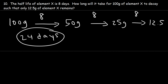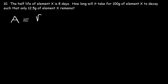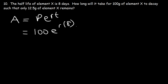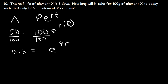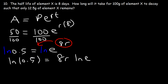Now let's get the same answer using the equation A equals P times e raised to the RT. First we find R: the initial amount is 100, and in 8 days the final amount is 50. Dividing both sides by 100 gives 0.5 equals e to the 8R. Taking the natural log of both sides: ln of 0.5 equals 8R times ln e. Since ln e equals 1, R equals ln 0.5 divided by 8, which is approximately negative 0.086643.